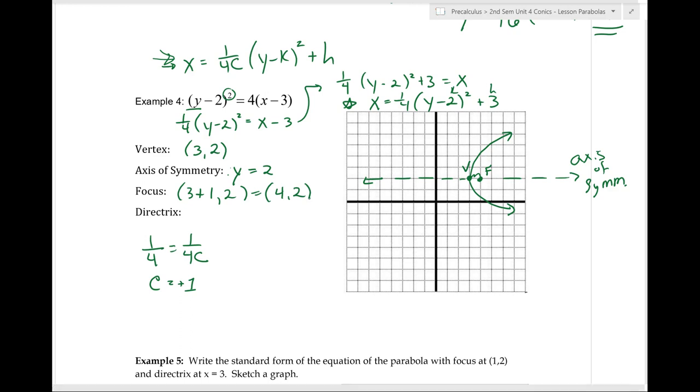Now, remember, the directrix is going to be, in this case, a vertical line, and it's going to be x equals some number. Well, we can find that by taking our vertex, and we're going back c, so minus c, which lands right here at 2, 2. So here's my directrix. And it crosses the x-axis at 2. So the directrix is that x is equal to 2.